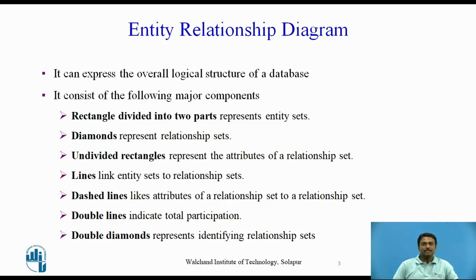Diamonds represent relationship sets. Undivided rectangles represent the attributes of a relationship set. Attributes that are part of the primary key are underlined. Lines link entity sets to relationship sets. Dashed lines link attributes of a relationship set to the relationship set. Double lines indicate total participation of an entity in a relationship set. Double diamonds represent identifying relationship sets linked to weak entity sets.